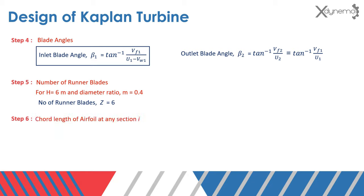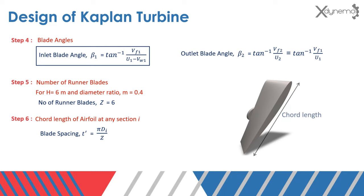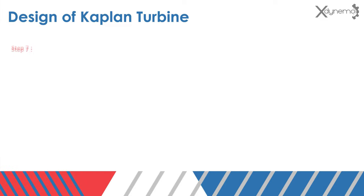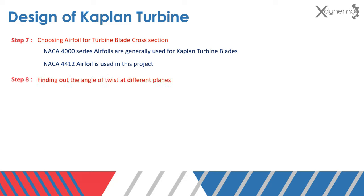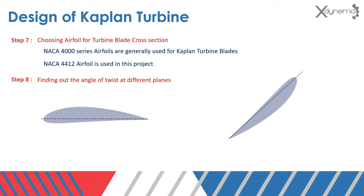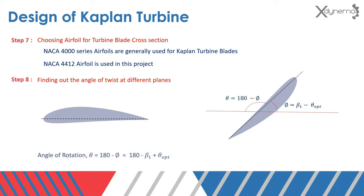Step 6: cord length of airfoil at any section. Blade spacing D equals circumference pi*D divided by Z. Cord length C varies from 0.75T at outer diameter to 1.3T at inner diameter. Step 7: choosing airfoil for turbine blade cross section. NACA 4000 series airfoils are generally used for Kaplan turbine blades; NACA 4412 airfoil is used in this project. Step 8: finding out the angle of twist at different planes. The NACA airfoil coordinates file corresponds to airfoil with horizontal cord, but the airfoil section needs to be inclined at a certain angle. We have to scale and rotate the coordinates using the transformation matrix. The angle of rotation theta equals 180 minus beta 1 plus theta_optimum. Here is the list of all the equations needed to design a Kaplan turbine.